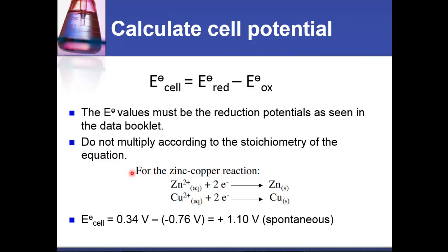For the zinc-copper reaction, zinc is a stronger reducing agent so it will reduce copper, meaning zinc is oxidized. Therefore the reduction half cell is copper. Using the equation: cell potential = 0.34 V (copper) minus (−0.76 V) (zinc) = +1.10 volts. If the cell potential is positive, the reaction is spontaneous.